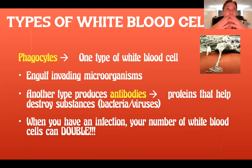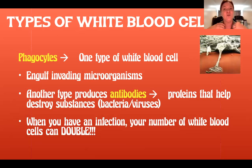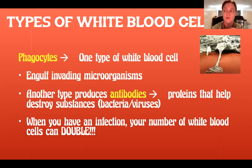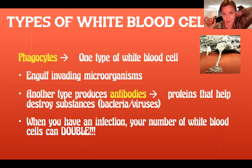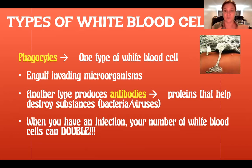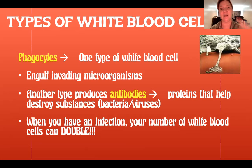Antibodies are also a major method used to test for the presence of viruses. For example, with coronavirus, when they do a blood serum test, they are looking for antibodies. If you're producing antibodies against the coronavirus, that means you're infected. When you have an infection, the number of white blood cells in your body can double.